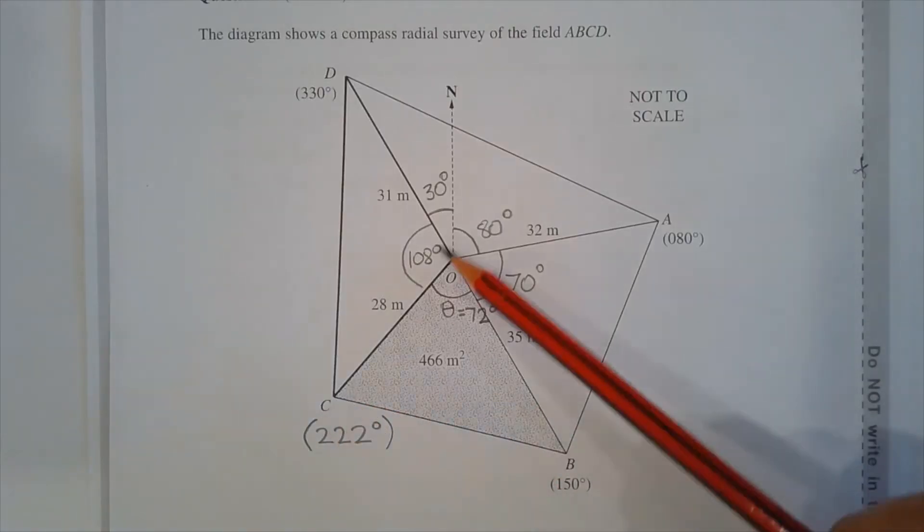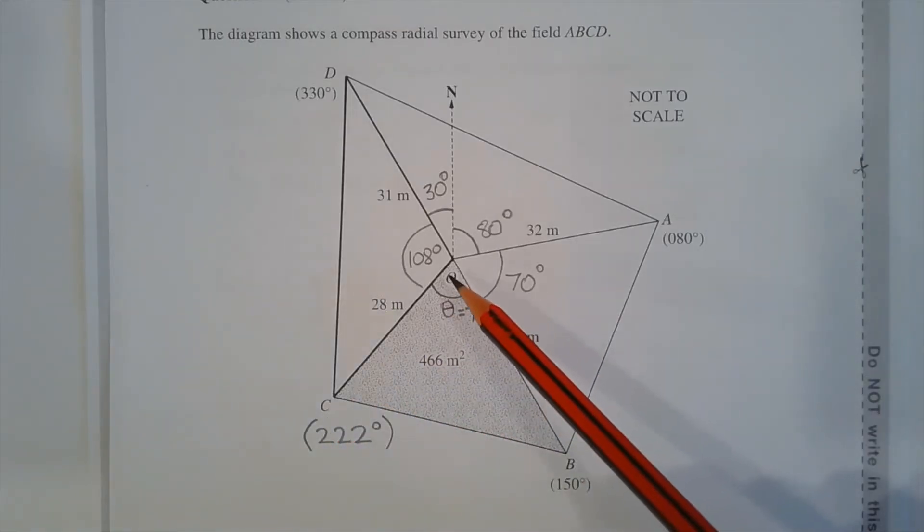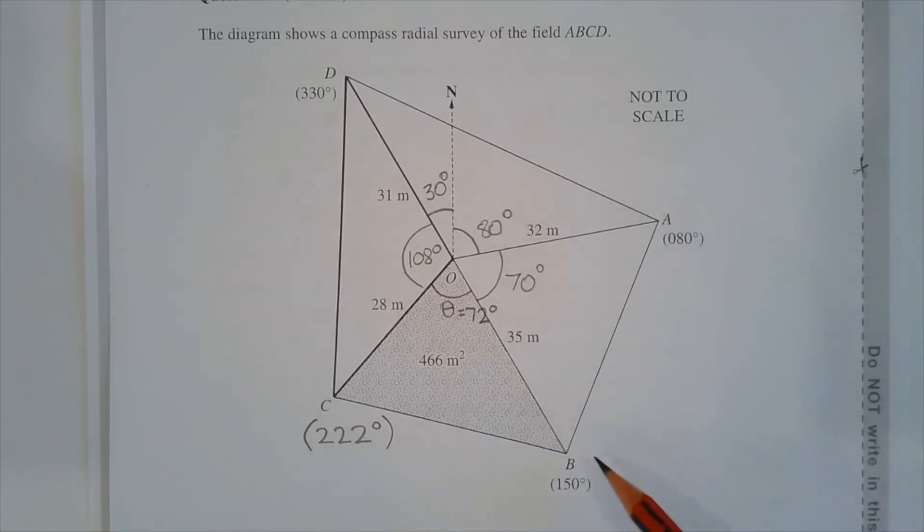From part A, angle COB is equal to 72 degrees. Which means we can find the bearing of C from O, which is 72 degrees, plus the bearing of B from O, which is 150 degrees, and that equals 222 degrees.